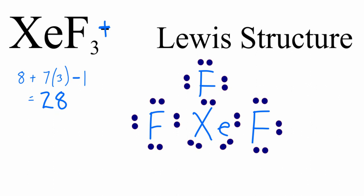And that's the Lewis structure for XeF3+. You can see that each of the fluorine atoms has 8 valence electrons. They must obey the octet rule. But xenon in the center, it has 2, 4, 6, 8, 10 valence electrons. It can have an expanded octet, so that's okay.